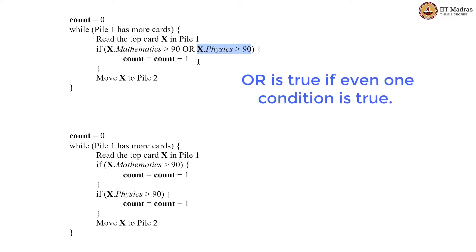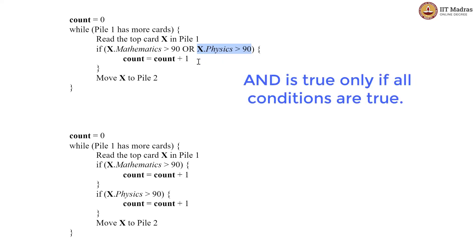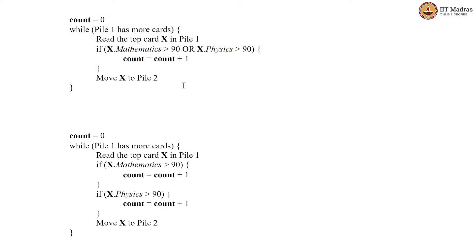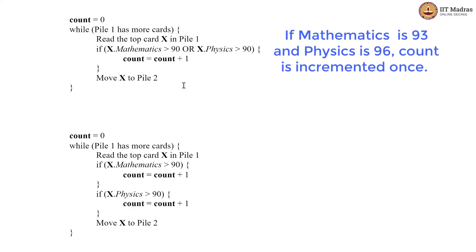So if at least one of them is greater than 90 — this is what an OR statement does. If you give it two conditions A or B, it checks for at least one condition being true. If A is true and B is not, the OR statement is still true. Similarly, if A is not true and B is true, the OR statement is still true. This is contrasted with the AND statement where both conditions must be true. So here, if the student has greater than 90 in maths but not necessarily in physics, the OR statement is still true and we increment count. So we are counting the number of cards where at least one of maths or physics is greater than 90. If both are greater than 90, you still count that just one time.